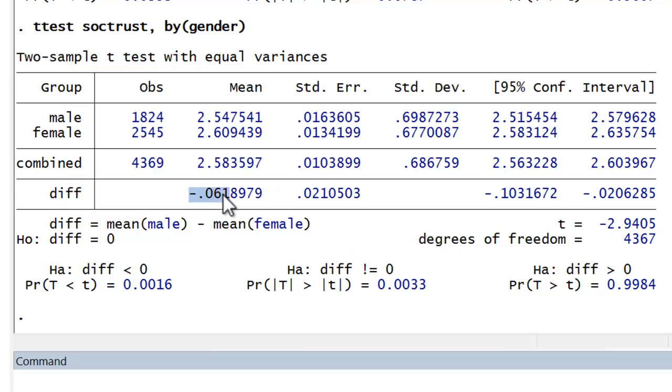Now that difference is very unlikely to be exactly this. This, again, is the difference based on a sample. The difference in the population between the genders is likely something different. What we can say is that with a 95% degree of confidence, the difference in the means of the genders on social trust in the population is somewhere in this range, in this interval.